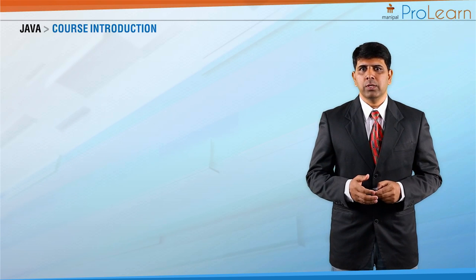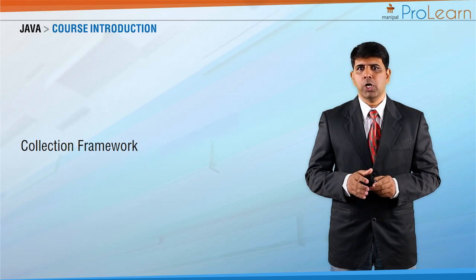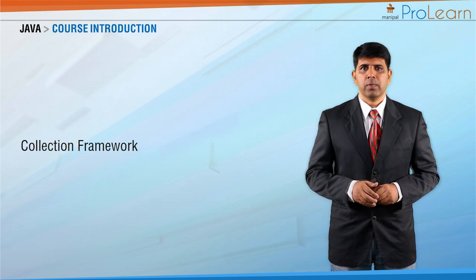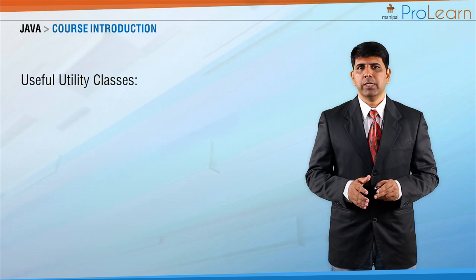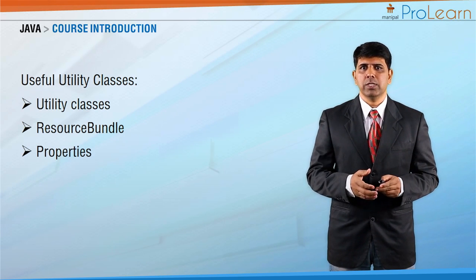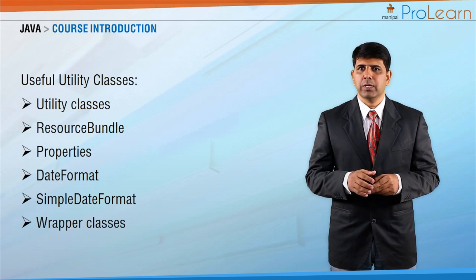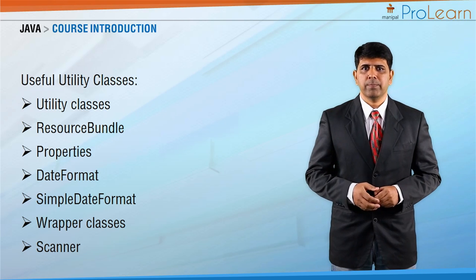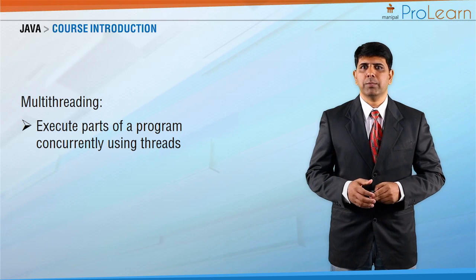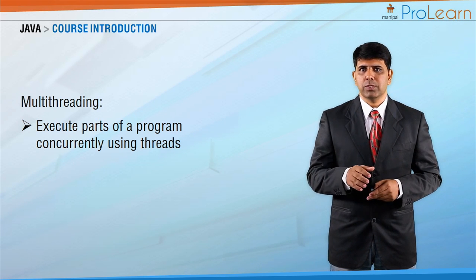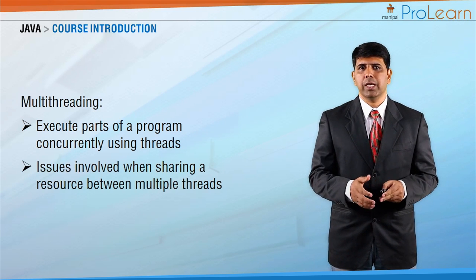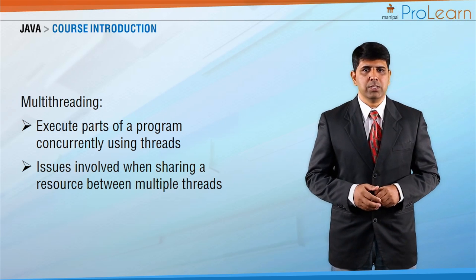The seventh module will explore Java's very powerful collection framework, which serves as an alternate to working with arrays. In the eighth module, you will learn some utility classes such as resource bundle properties, formatting dates using DateFormat and SimpleDateFormat, working with wrapper classes and scanners. The ninth module will teach you how to execute parts of a program concurrently, meaning parallel execution, using threads. You will also learn the issues involved in sharing a resource between multiple threads and how to handle such scenarios.